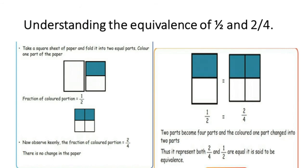Another example for understanding the equivalence of 1 by 2 and 2 by 4: take a square sheet of paper and fold it into 2 equal parts. Colour one part of the paper. The fraction of the coloured portion is 1 by 2. Now observe the fraction of the coloured portion — 2 by 4. There is no change in the paper. 2 parts become 4 parts and the coloured 1 part changes into 2 parts. Thus, it represents both 2 by 4 and 1 by 2 as equal — this is called equivalence.